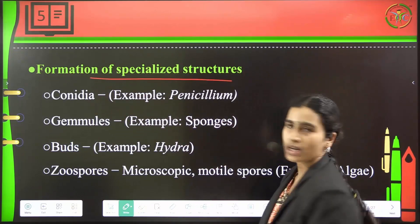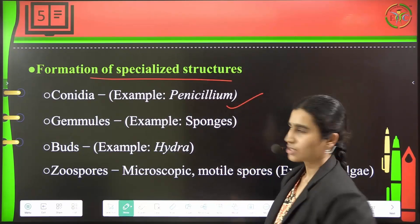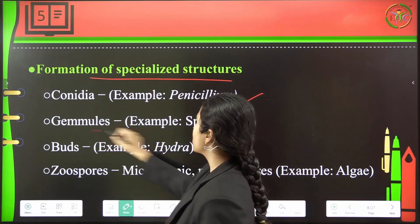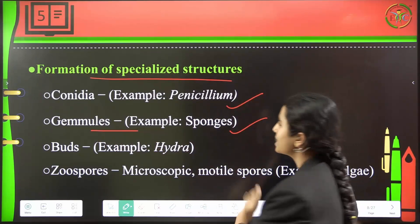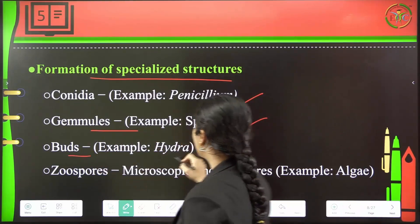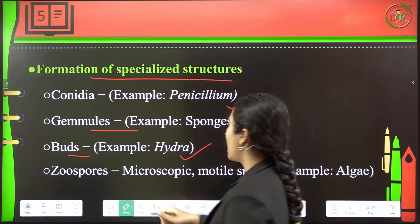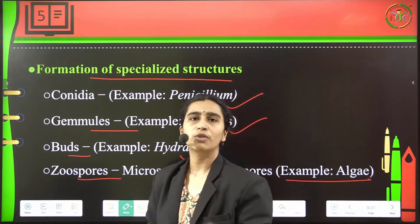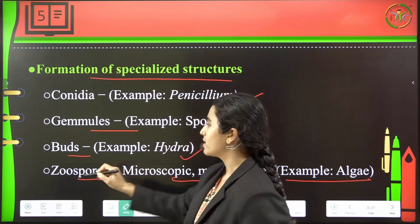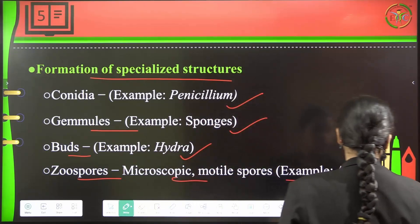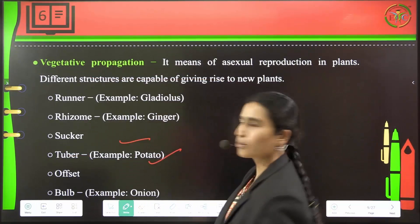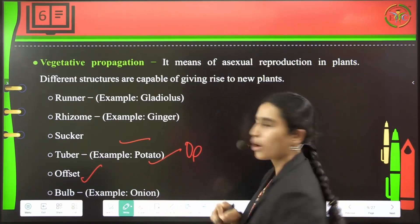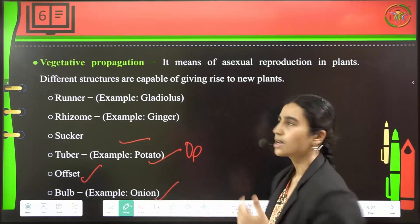Formation of specialized structures: conidial structures — formation of conidia — is seen in Penicillium, which is a fungus. Gemmules are seen in sponges, usually sea organisms. Budding is seen in Hydra. Zoospores are seen in algae — the algal species form motile spores called zoospores and they reproduce. Tubers are seen in potato, offsets — where new ones are formed directly — and bulb formation is seen in onion.